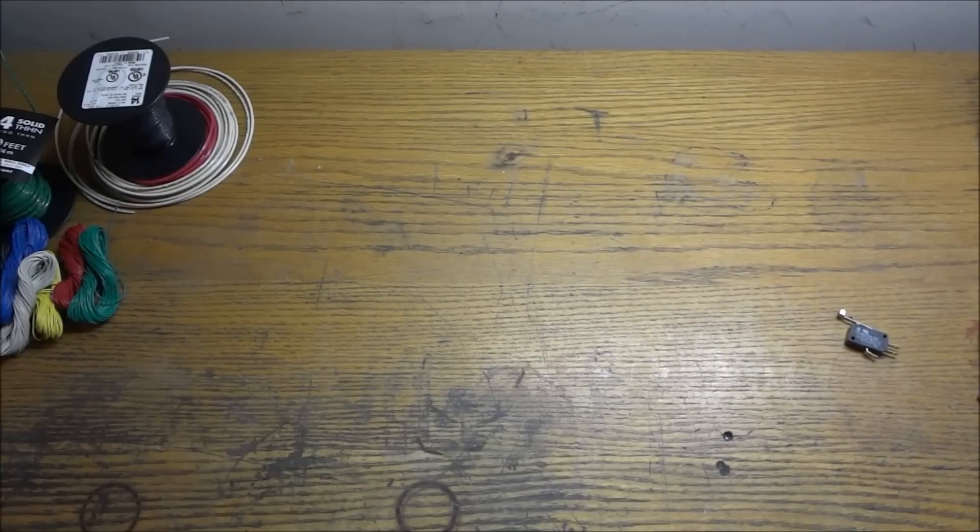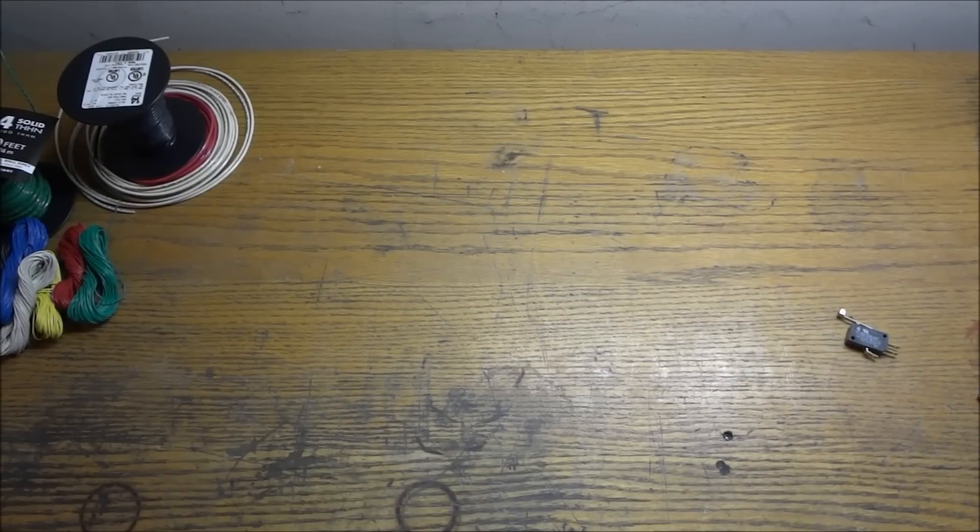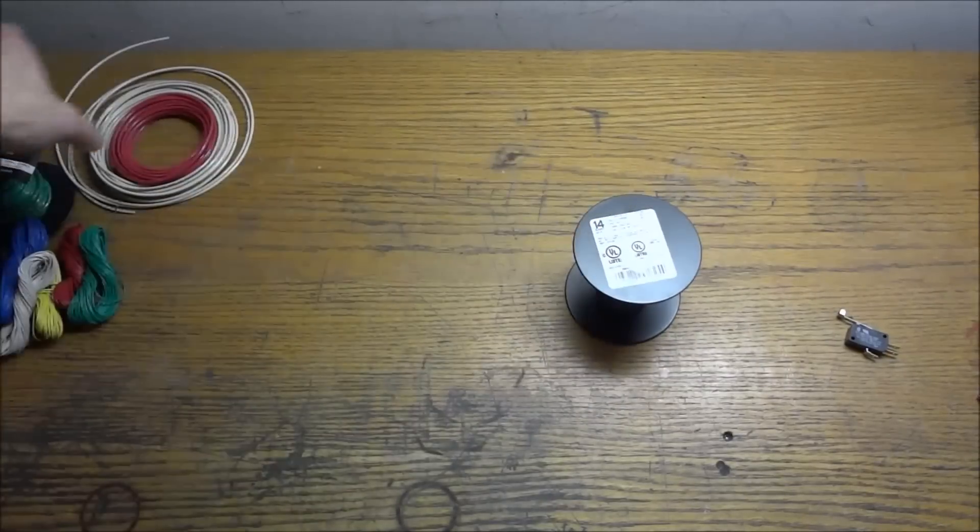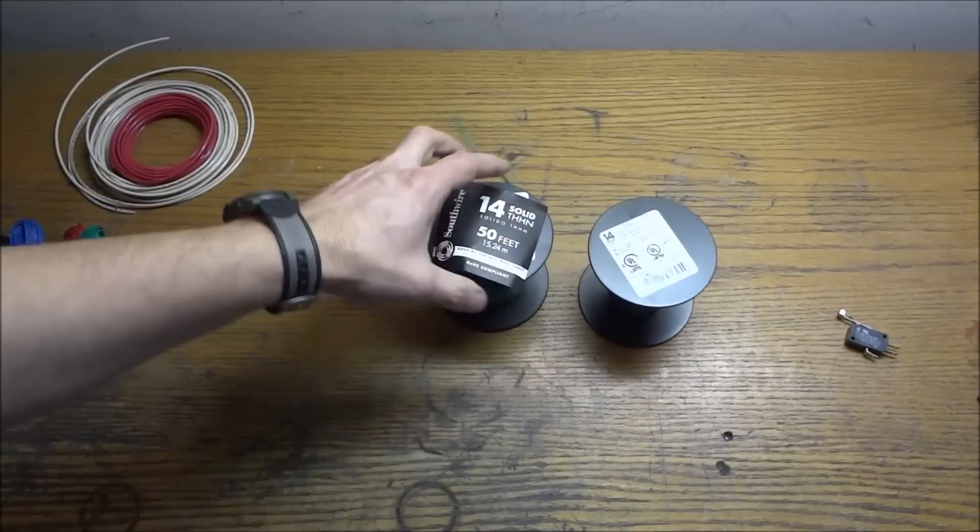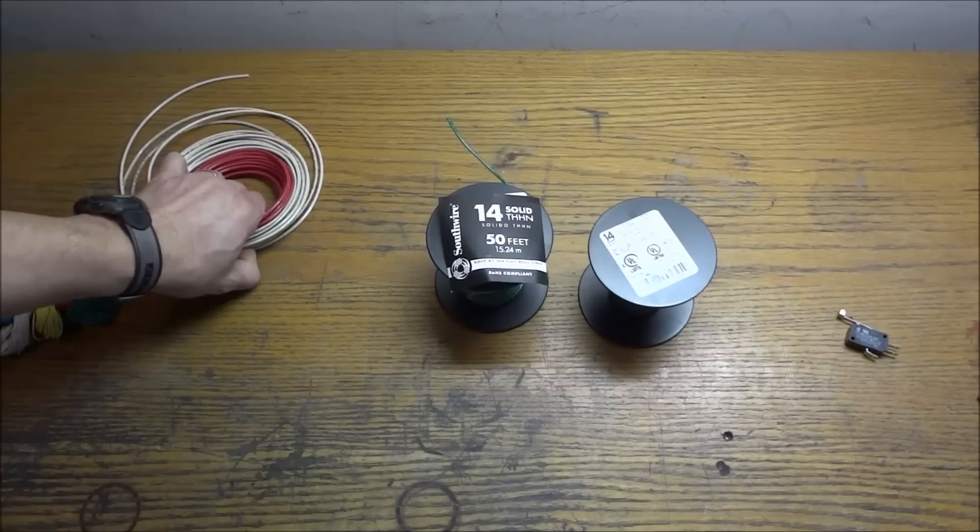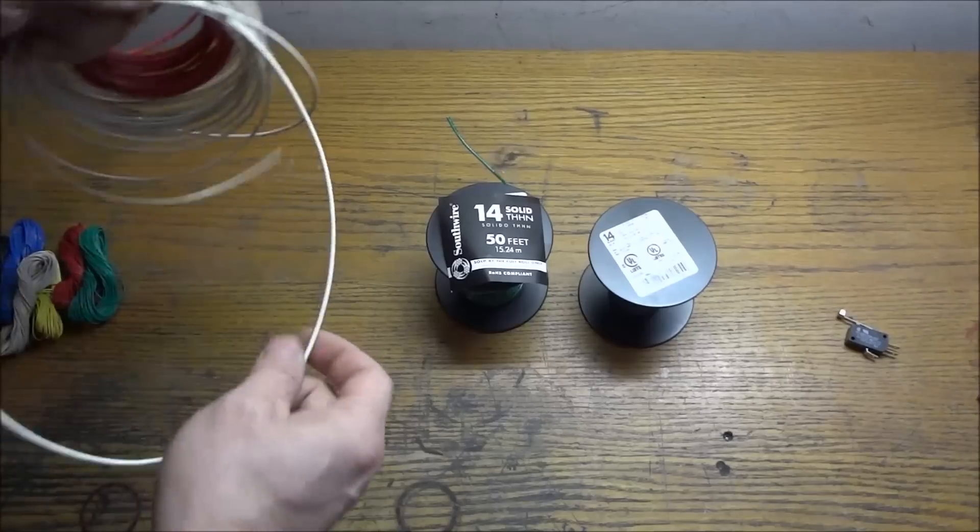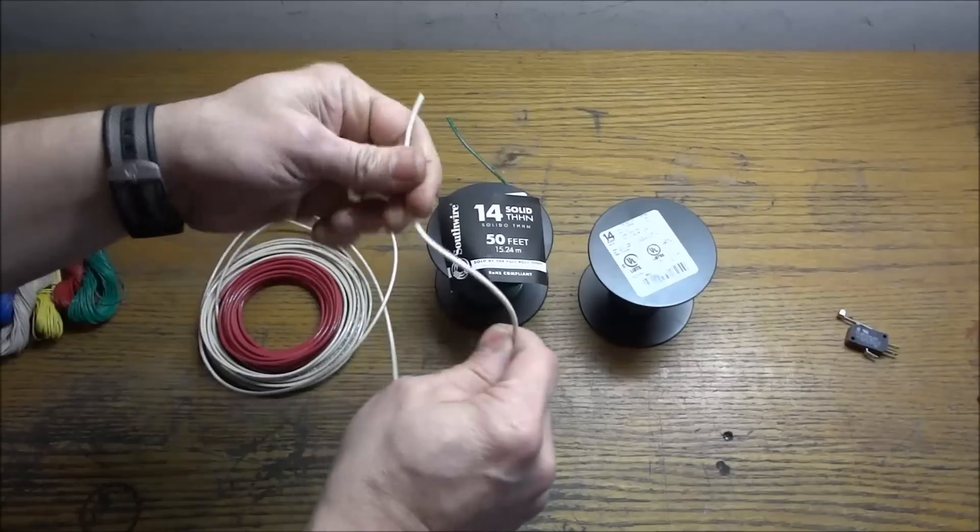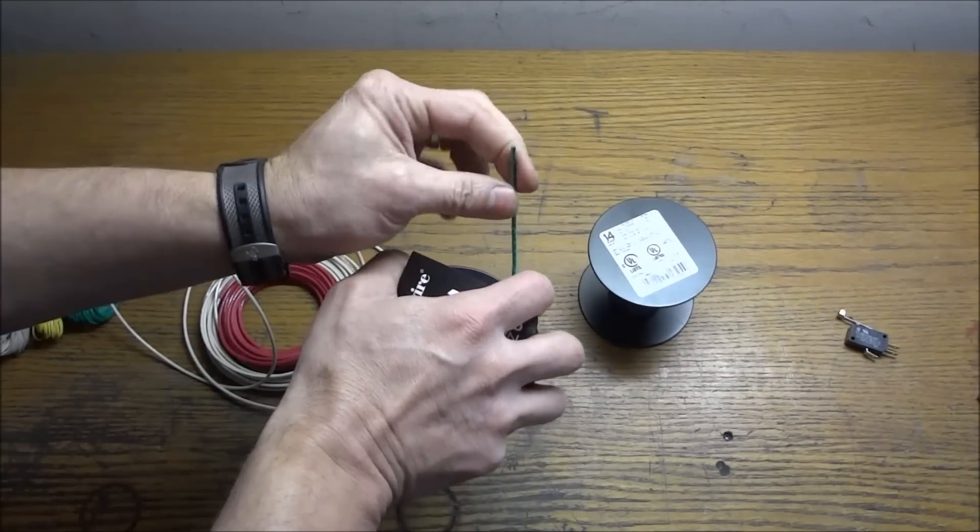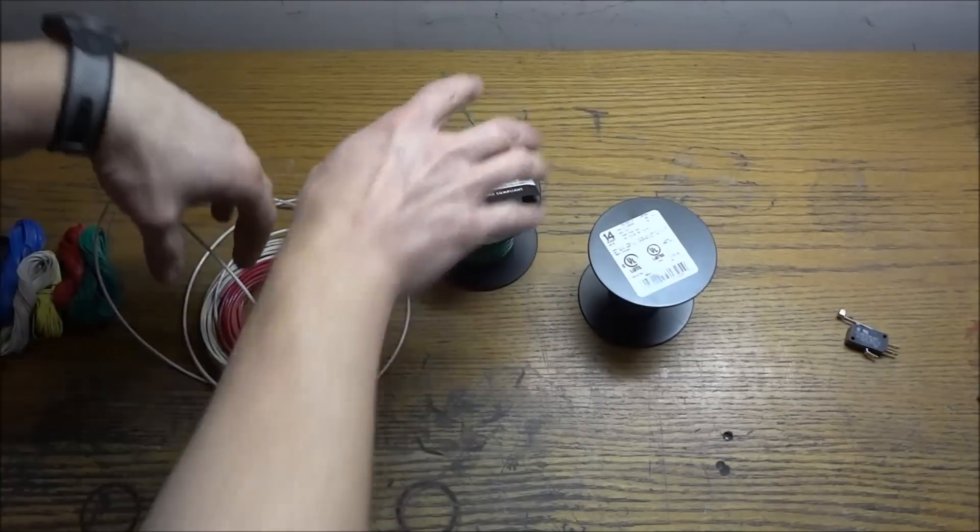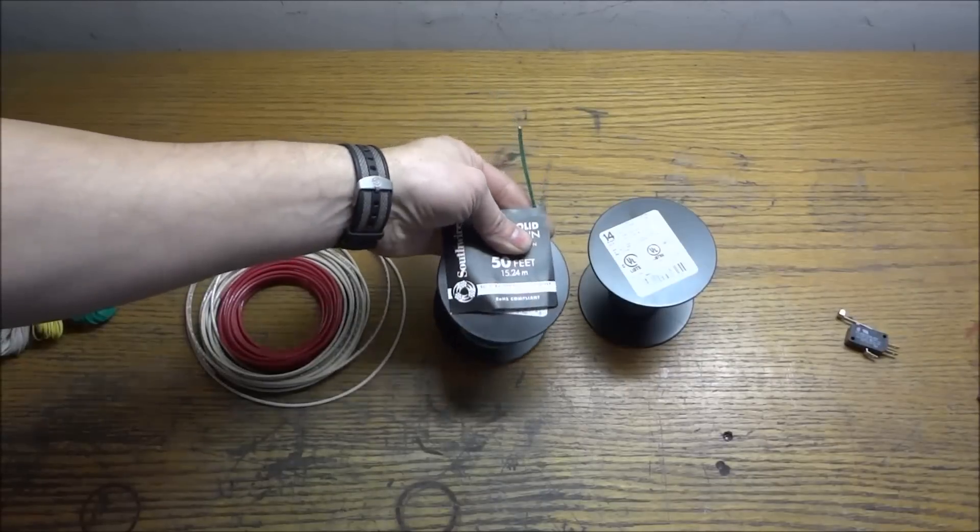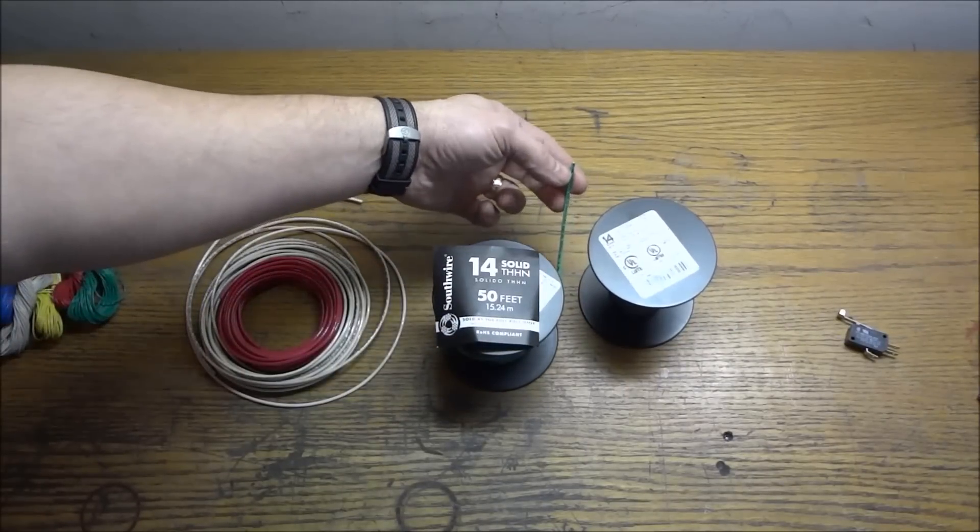And that's pretty much it for our cabling. Our wiring for our panel. I'm using 14 gauge solid core. You can use stranded whatever you have. I do have some stranded and you can see that the stranded is really flexible. And the solid core is not as flexible.